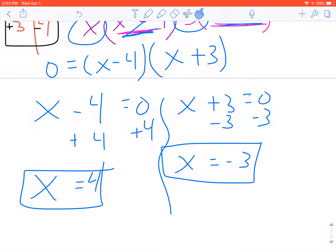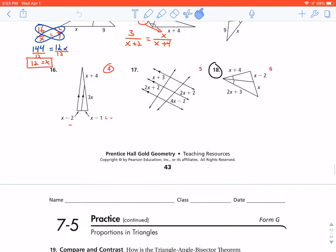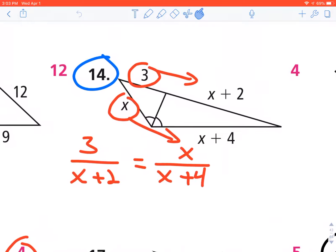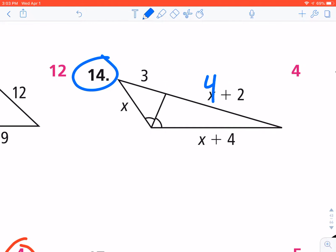Now the answer key only has an answer of 4, not negative 3, even though our factor solution gave us 4 and negative 3. Well the reason that is, is if I plug 4 into some of these expressions, I get all positive values, which is all possible because these are all representing sides of a triangle.